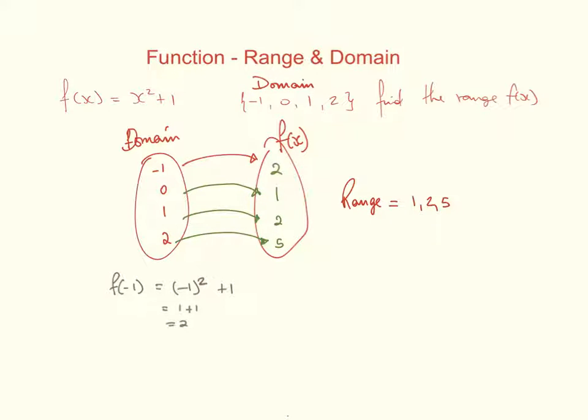So it basically tells me that my range of this function for the domain that I have been given would be 1, 2, and 5. And that is the end of that. 2 appears twice. I don't need to write it twice. I just need to write it just the one time. So 1, 2, and 5. And that is my range of my function.